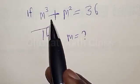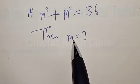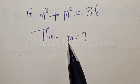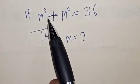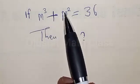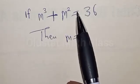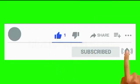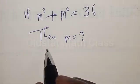If m³ plus m² is equal to 36, then what is the value of m? Hi everyone, welcome to my class. In this class we want to quickly find the value of m from this given equation: m³ plus m² is equal to 36. Before we proceed, please don't forget to like, share, comment and subscribe. We are going to use a special trick.